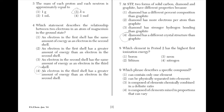Which element in period 2 has the highest first ionization energy? Neon, answer choice 3, will have the greatest ionization energy. Ionization energy increases as you move toward the right on the periodic table due to an increase in nuclear charge, causing the valence electrons to become closer to the nucleus.